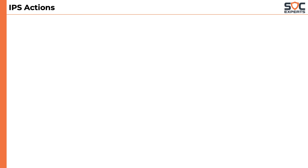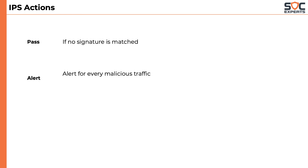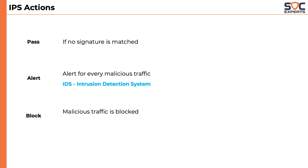Once the IPS scans the traffic, it can take three actions. It can pass the traffic if no signature is matched. It can alert if the administrator has set the signature to alert only — an alert will be thrown in the UI and sent to the admin via email. This is when the system is called IDS, Intrusion Detection System, because it detects and just alerts the administrator. The third action an IPS could take is block, where the system is configured to block the traffic — this makes the system an IPS, Intrusion Prevention System.